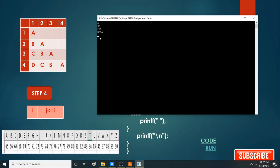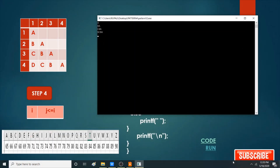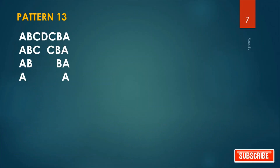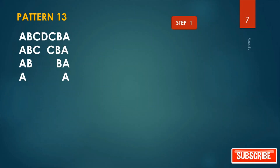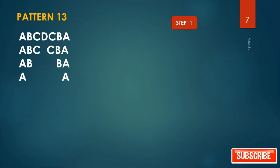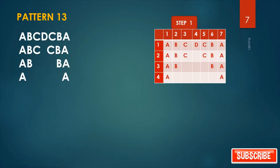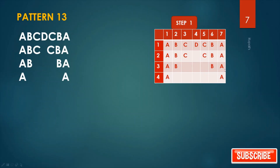This is our square pattern. Our next pattern is this. Solve this pattern by four steps. Step one: draw the table — four rows and seven columns, place your alphabet accordingly.